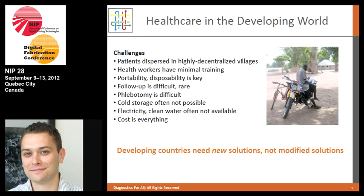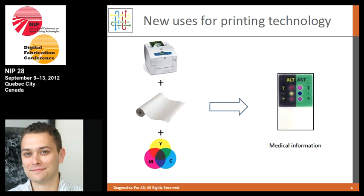We don't want to take a current instrument and try to make it cheaper, because it's still working in a centralized healthcare model. We need new technologies starting from the ground up. That's what I'm hoping to tell you about today — what we're doing with paper. Looking at three technologies: printing, paper, and new ways of generating and thinking about color, and how we combine these to transform them into medical information, particularly for areas that can't afford current technologies. A very important concept is the digitization of this medical information.